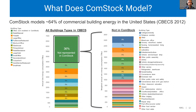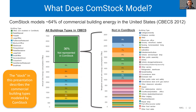So what does Comstock model? We model 14 building types, shown to the left. Comparing these 14 building types to CBECS, the 14 building types that we model are below the black box, and what's in the black box is not represented in Comstock. According to CBECS, this is about 36% of the stock building energy data. So we can say Comstock models about 65% of commercial building energy usage in the United States. In this presentation, when I say 'the stock' or 'the building stock,' I'm referring to all the buildings that Comstock does model — approximately 65%.